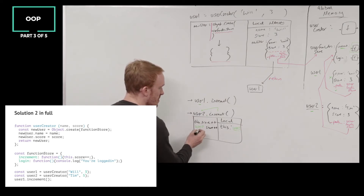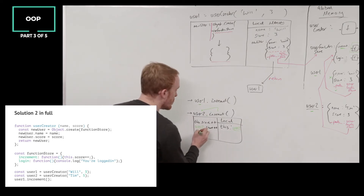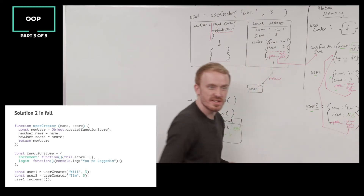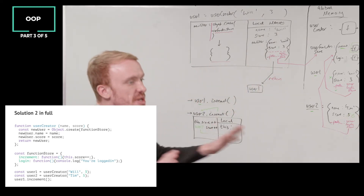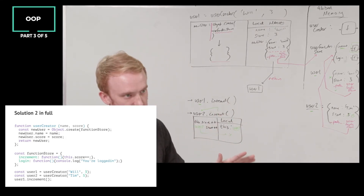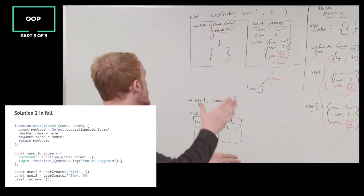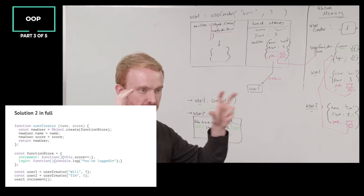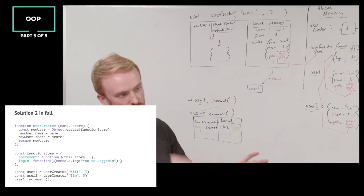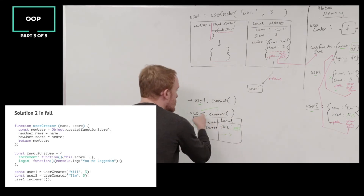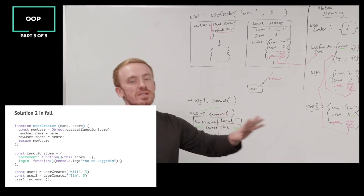Where is user2? If I look at local memory, that's not there — it's going to skip one scope out, find user2, find the score property, and increment it to six. My increment function has become truly general because of the this keyword. Our first rule: it will always point to the object to the left-hand side of the dot on which that function method is being called.